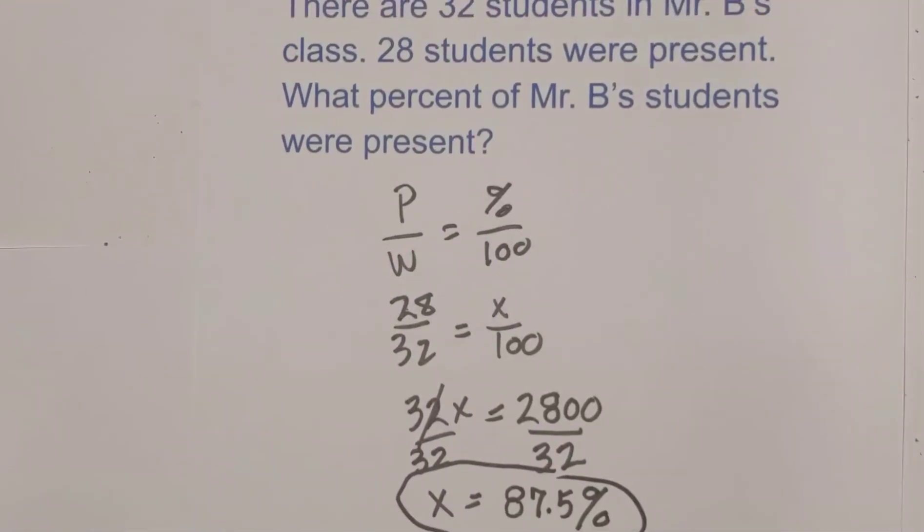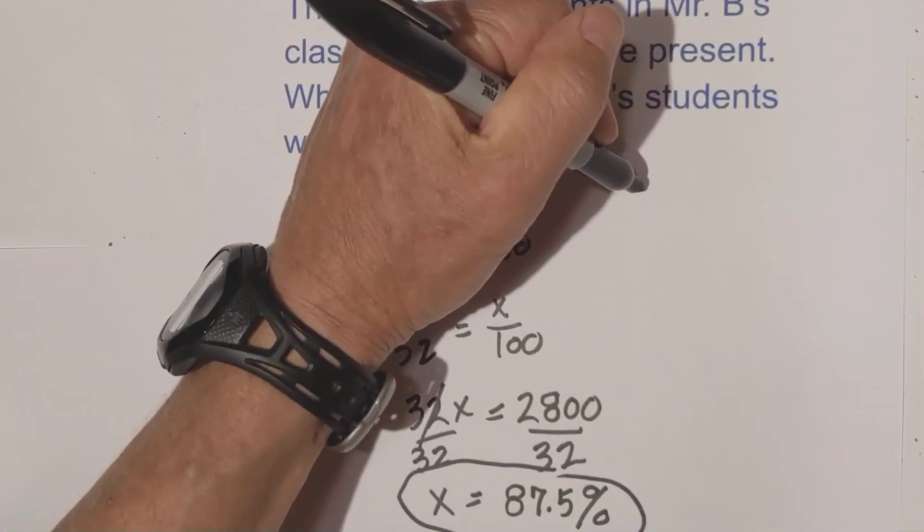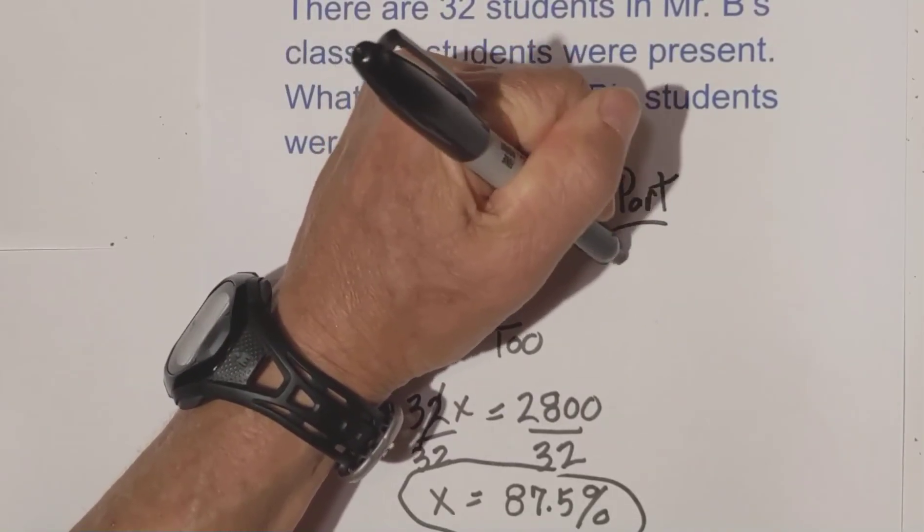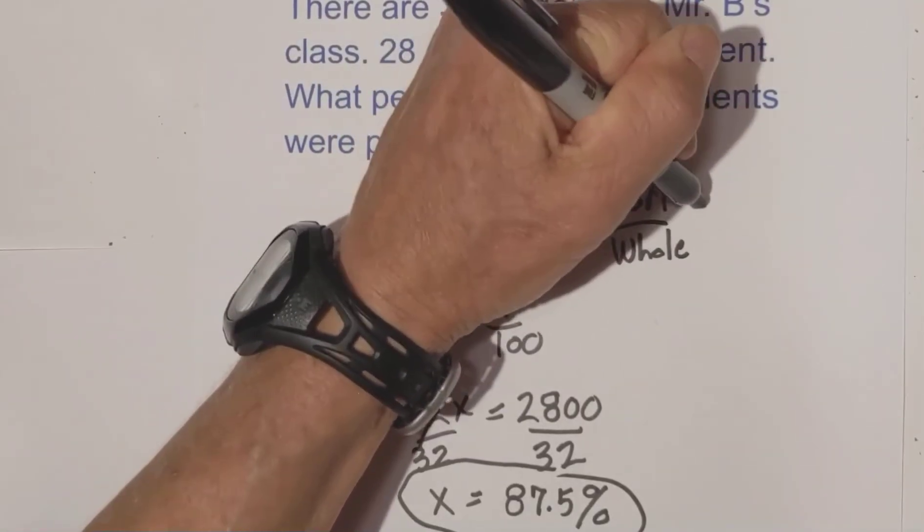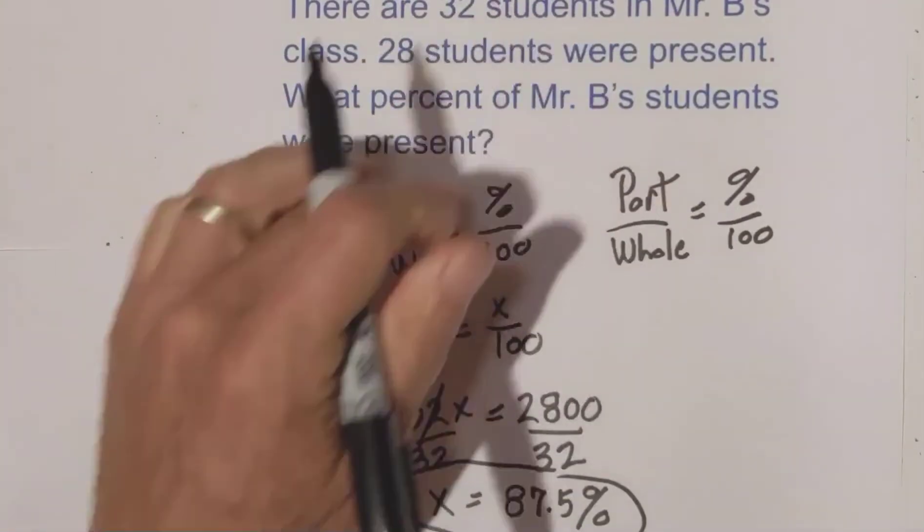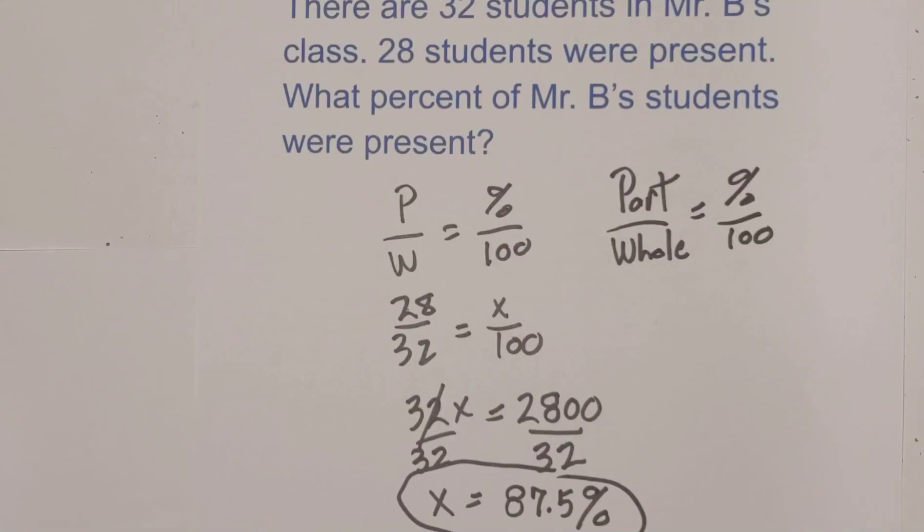So in summary, you can use the formula. Okay, part over whole equals percent over 100, cross multiply and solve for x, and that helps you find the percent and figure out these word problems.